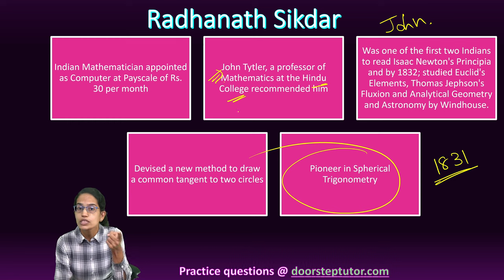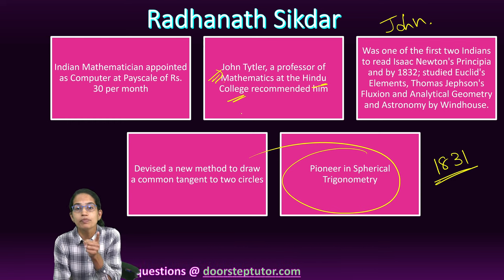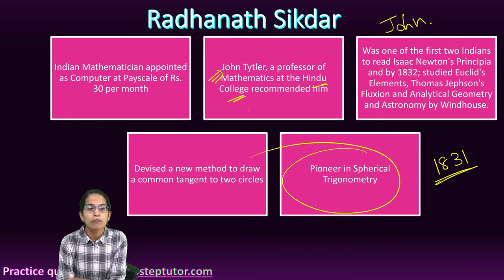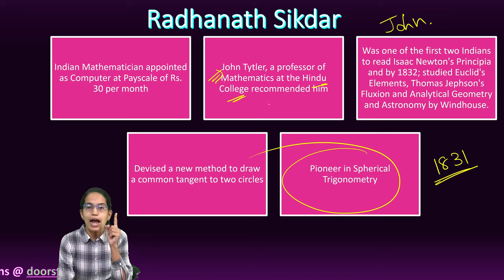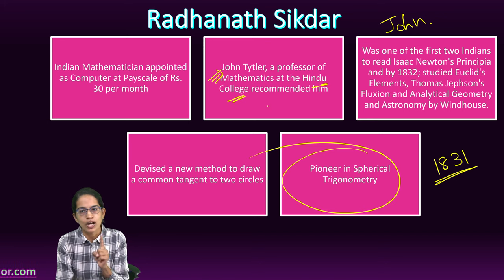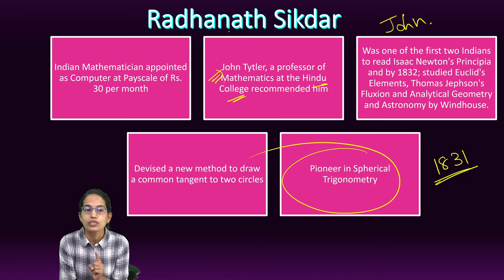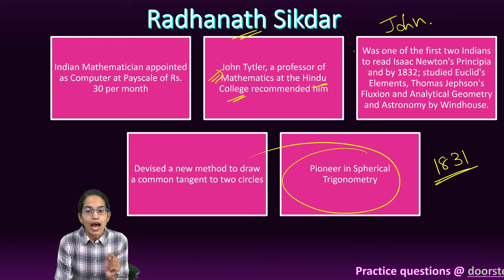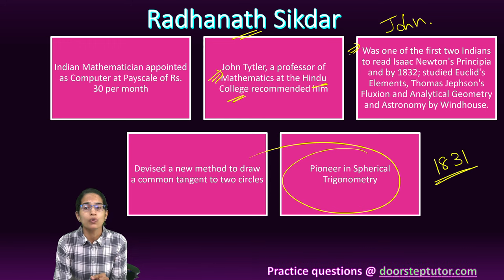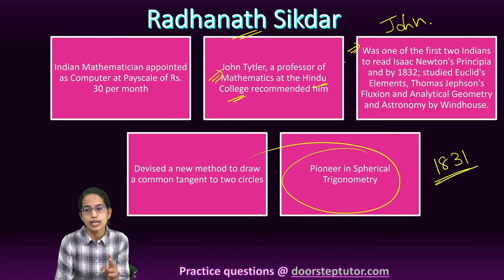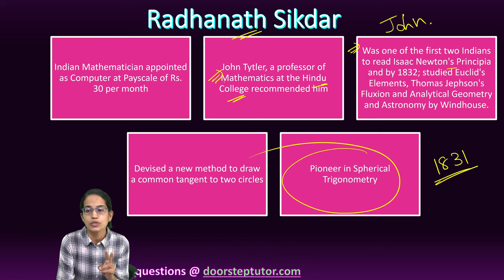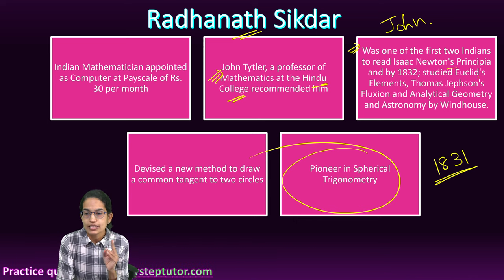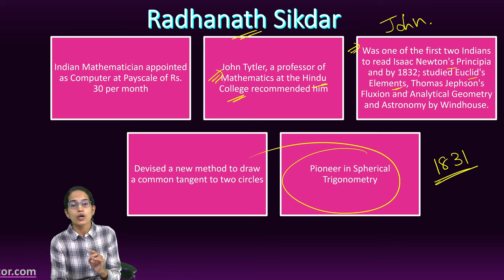Hindu College was later renamed Presidency College, Calcutta. John Tritler recommended one of his students — Radhanath Sikdar. Radhanath was a unique mathematician, known as one of only two Indians who had read Isaac Newton's Principia and studied Euclid's Elements, making his work truly remarkable.